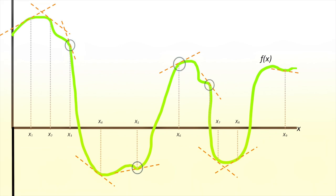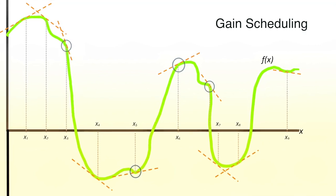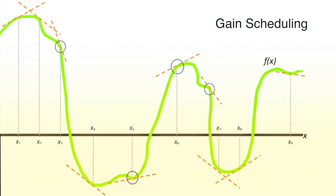Thus, as the satellite progresses in its mission, gain scheduling allows the controller to rewrite the control law to suit a specific part of the space mission. Here, you can see circles at the operating points where the dynamics have been linearized.